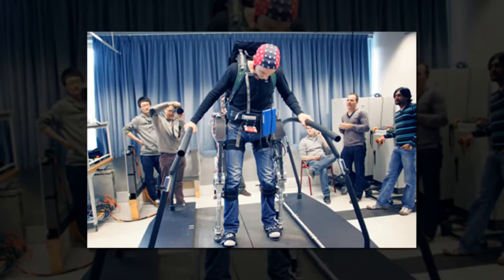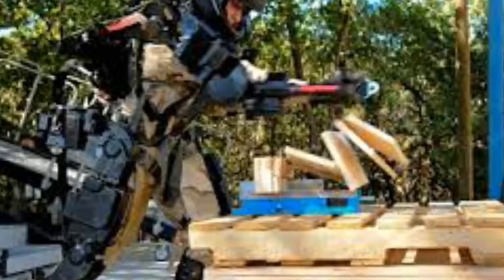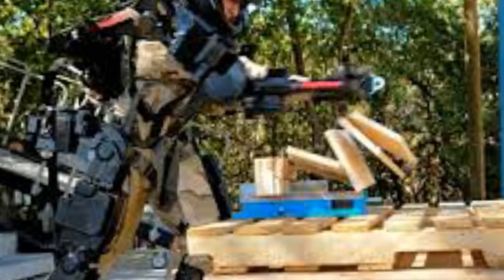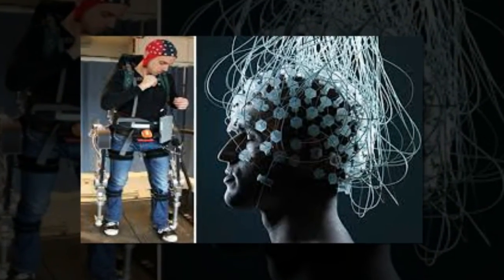Using an electroencephalogram cap, the system allows users to move forwards, turn left and right, sit and stand simply by staring at one of five flickering light-emitting diodes. The results are published today in the Journal of Neural Engineering.